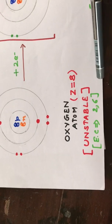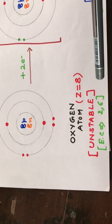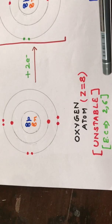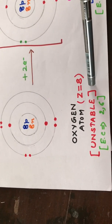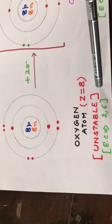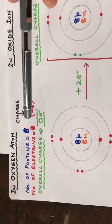Since it is not following the octet rule, which says there should be eight electrons in the outermost shell, it is said to be chemically unstable. However, since it has equal numbers of protons and electrons, it is electrically neutral.